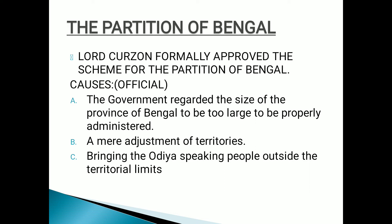Now, the main title of the chapter — Partition of Bengal. Lord Curzon formally approved the scheme for the partition of Bengal officially in the year 1905. They didn't want a revolt, so publicly they announced their move with stated reasons to convince Indians. The government regarded the size of the province of Bengal to be too large to be properly administered. It was a very large province comprising East Bengal and West Bengal — East Bengal later changed into Bangladesh.